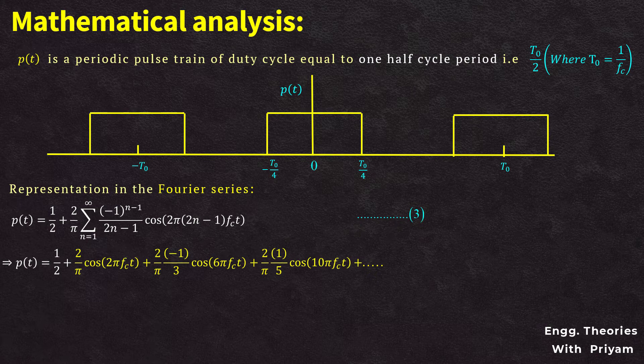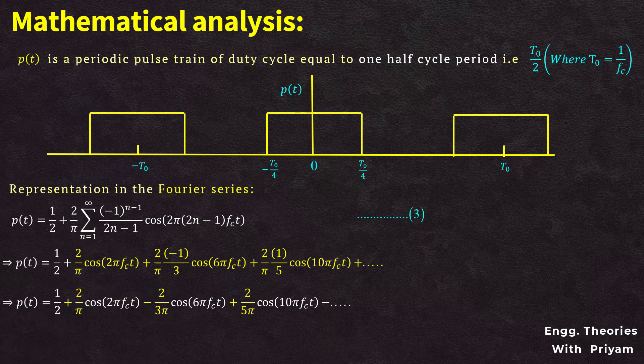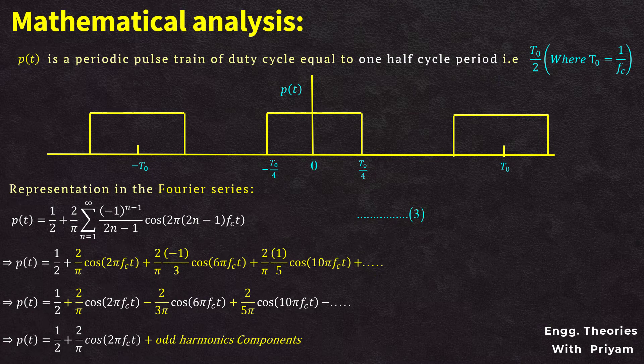By simplifying the summation term, p(t) = 1/2 + (2/π)·cos(2π·fc·t) + (2/π)·(-1/3)·cos(6π·fc·t) + (2/π)·(1/5)·cos(10π·fc·t) + ... which simplifies to p(t) = 1/2 + (2/π)·cos(2π·fc·t) - (2/3π)·cos(6π·fc·t) + (2/5π)·cos(10π·fc·t) + odd harmonic terms. This is identified as equation number 4.